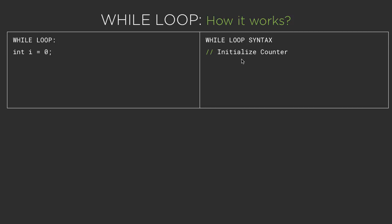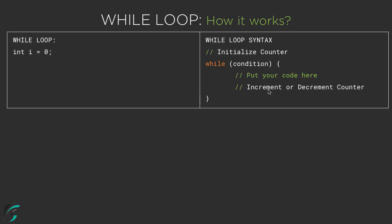So let's check out the while loop syntax. On the right hand side I will show you the while loop syntax, and on the left hand side I will show you the code snippet. When using the while loop, we first initialize the counter outside the while loop. Then we use the syntax: while, followed by a space, bracket, and then the condition. This condition always returns a boolean value. Inside the while loop body, we put our code and then increment or decrement the counter.